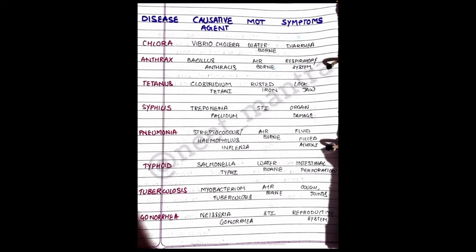Next we have Tetanus. The causative agent is Clostridium tetani. It is transmitted through rusty iron or any scrap material, and it causes Lockjaw. Lockjaw occurs because the contraction and relaxation of muscle is so rapid that the muscle becomes permanently spasmed.